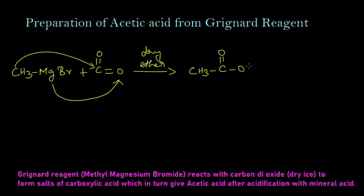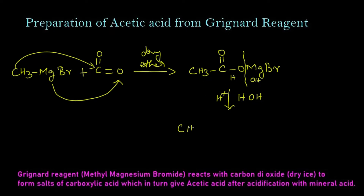This intermediate on further acid hydrolysis — that is addition of water (HOH) — the bond gets cleaved: hydrogen attaches here and OH attaches here. We get CH3COOH, acetic acid, and MgOHBr, hydroxy magnesium bromide.